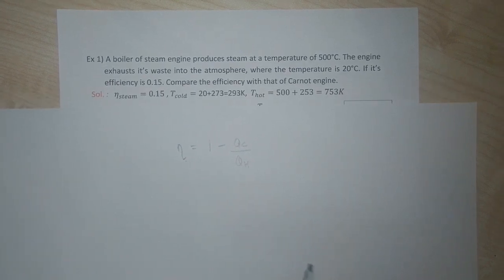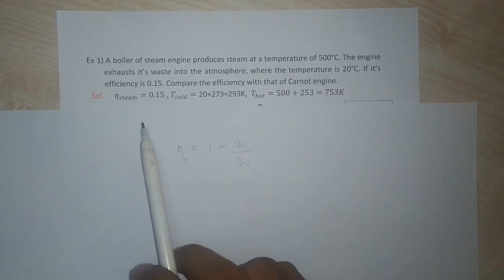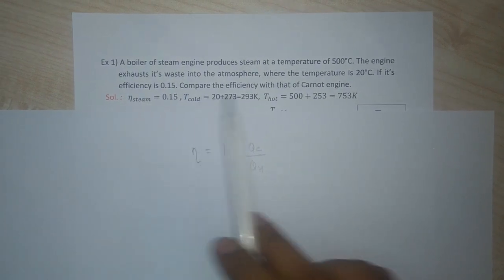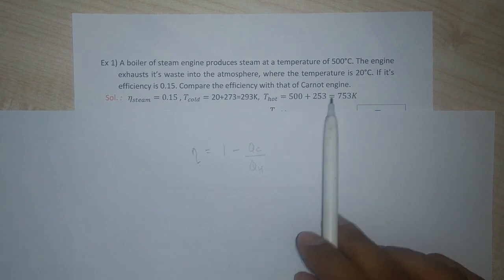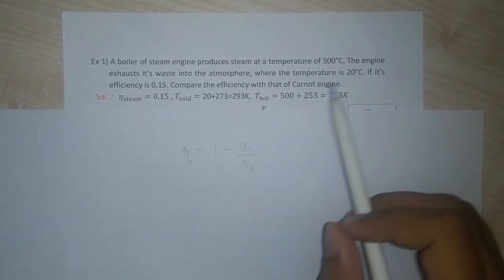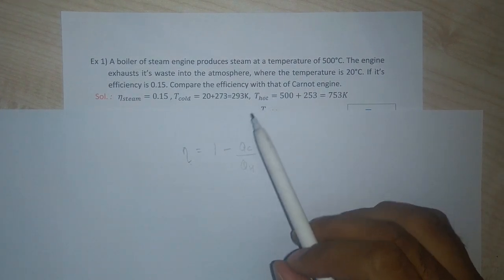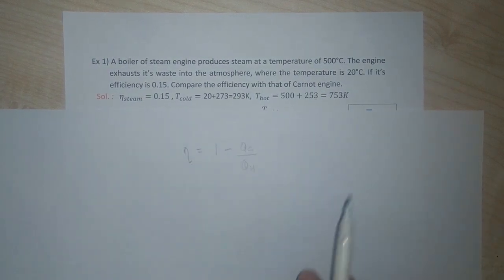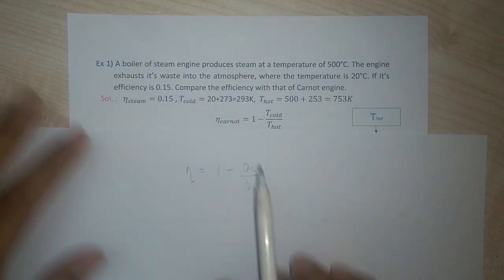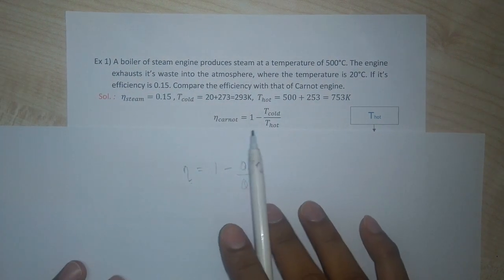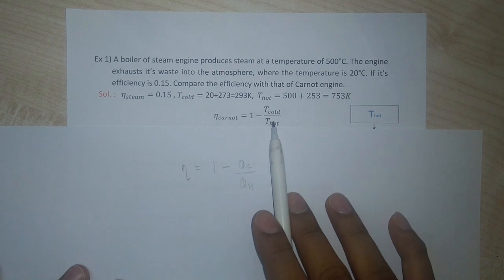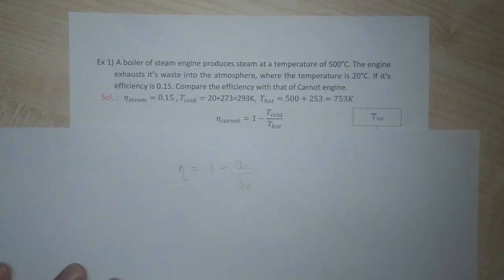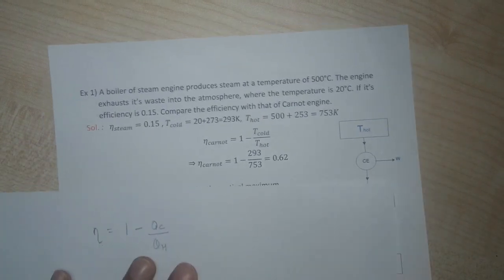So we are given the efficiency of the steam engine, the temperature of the cold reservoir, and the temperature of the hot reservoir. Remember, whenever temperatures are given, ensure all temperatures are in the Kelvin scale. The efficiency of a Carnot engine is given as 1 minus the temperature of the cold reservoir divided by the temperature of the hot reservoir.